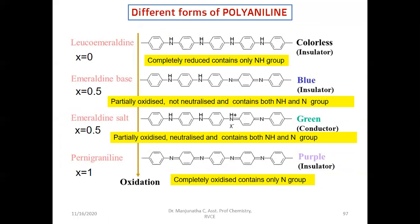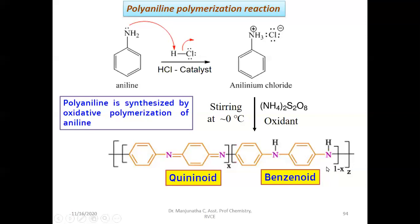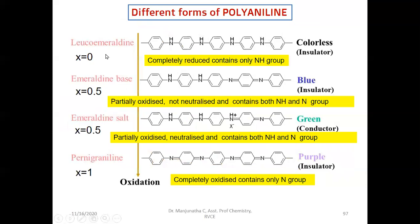During the synthesis, polyaniline can exist in four forms. The first one is Leuco-Emeraldine, second is Emeraldine base, third is Emeraldine salt, or it can exist as Pernigraniline. This depends on the percentage X, which is the composition of quinoid and benzenoid structures. If X equals 0, you will have only benzenoid backbone — that is called Leuco-Emeraldine. In that form, the nitrogen atoms are completely reduced, the polyaniline is not conducting, it is colorless, and it is an insulator.